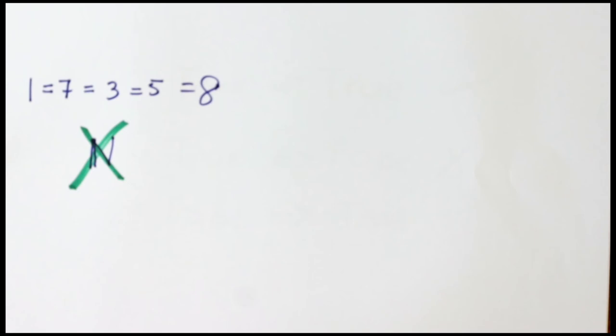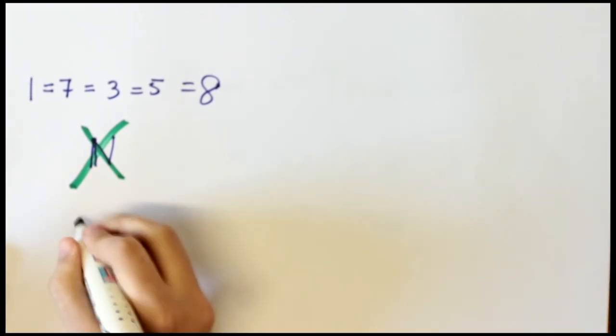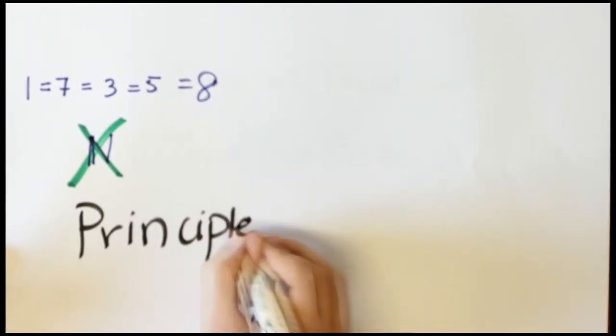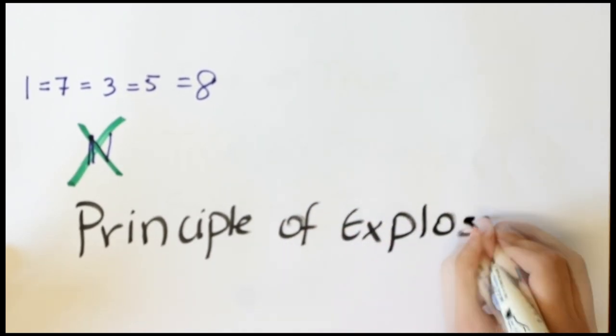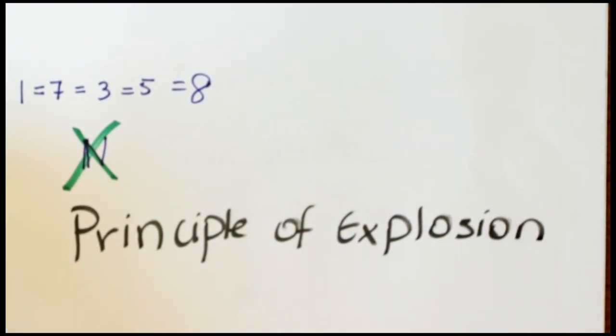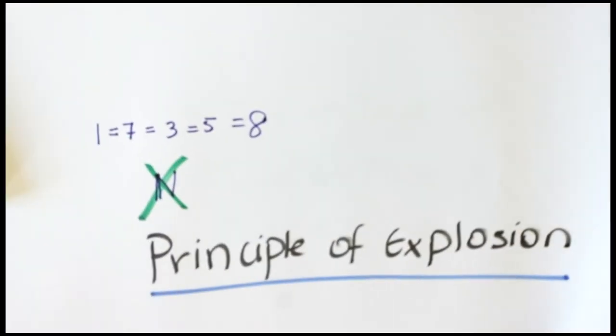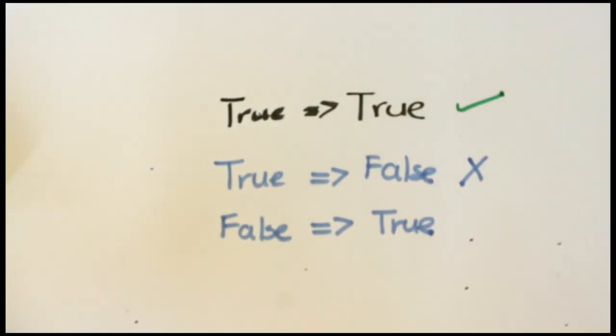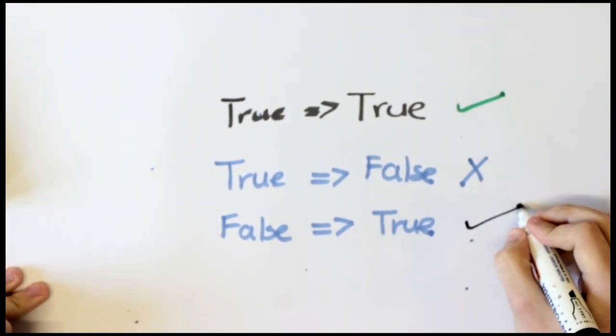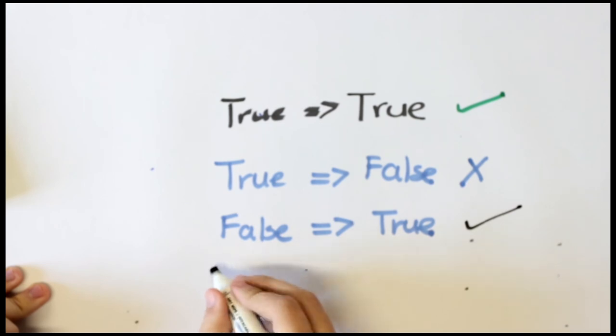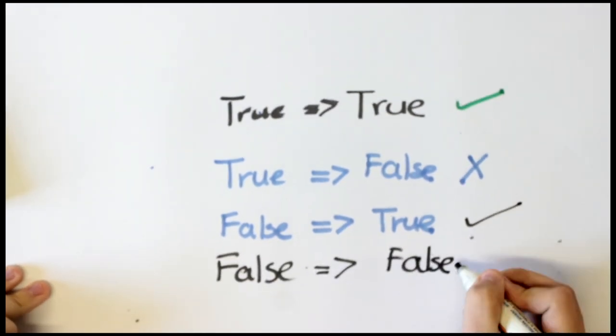You can prove anything from a contradiction. This is the principle of explosion. Anything follows from a contradiction whether it is true or false. So by this we know false implies true is true and false implies false is also true.